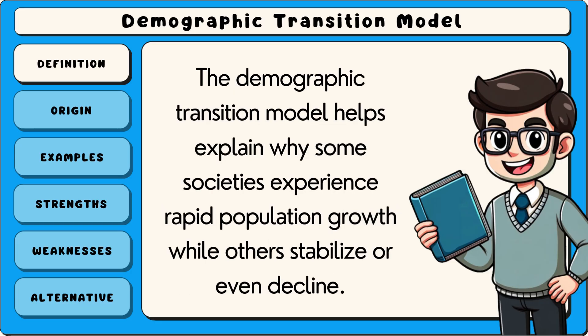The demographic transition model helps explain why some societies experience rapid population growth while others stabilise or even decline.